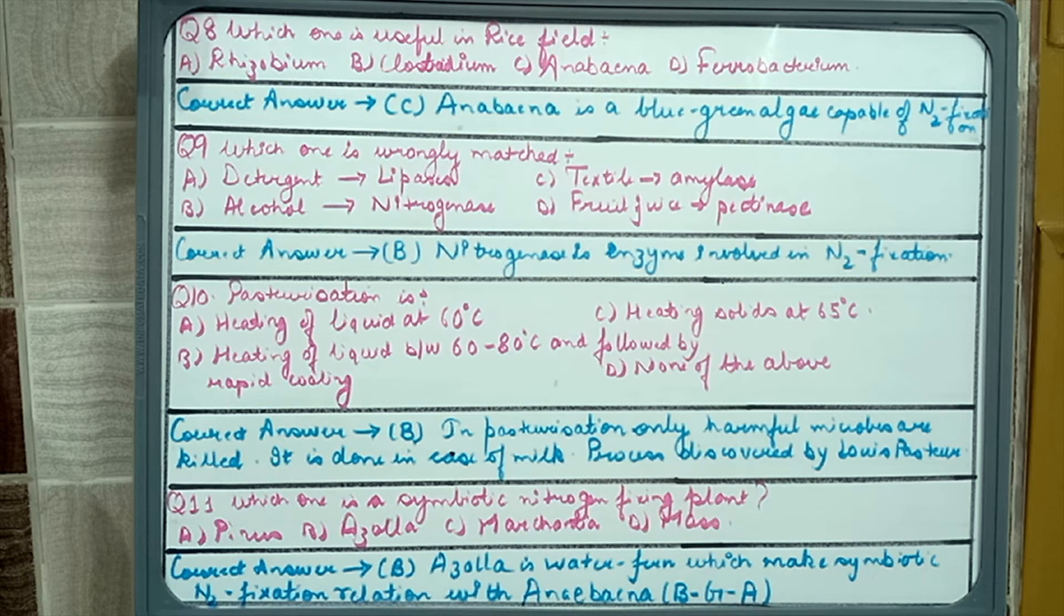Question number 10: pasteurization is heating of liquid at 60 degree Celsius, heating solids at 65 degree Celsius, heating liquid between 60 to 80 degree Celsius followed by rapid cooling, or none of these. The answer would be heating liquid between 60 to 80 followed by rapid cooling. This process is known as pasteurization and it is used for sterilization of milk and it was given by Louis Pasteur.